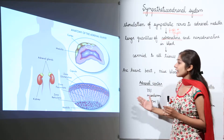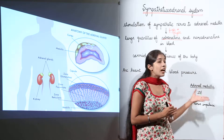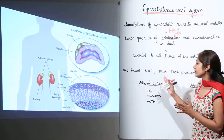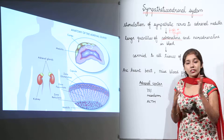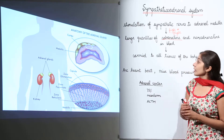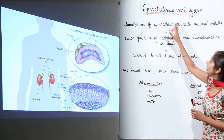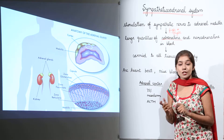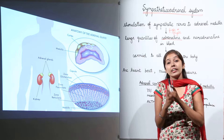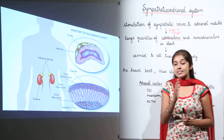Another difference is that the adrenal cortex has three zones, but the adrenal medulla has no such zones. To summarize, the sympathicoadrenal system is the integrated system of the sympathetic nervous system plus the adrenal medulla, and they work together to produce coordinated physiological responses.